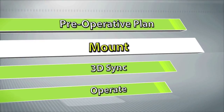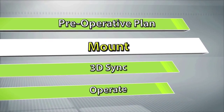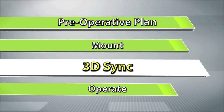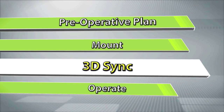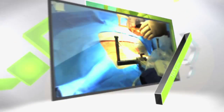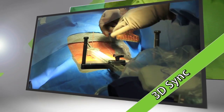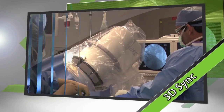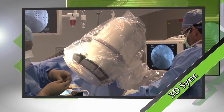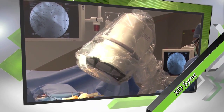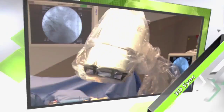Once the mounting platform is in place, matching of the intraoperative anatomy to the preoperative blueprint can be achieved. A 3D marker is attached to the mount and two fluoroscopic images are taken — an AP and an oblique.